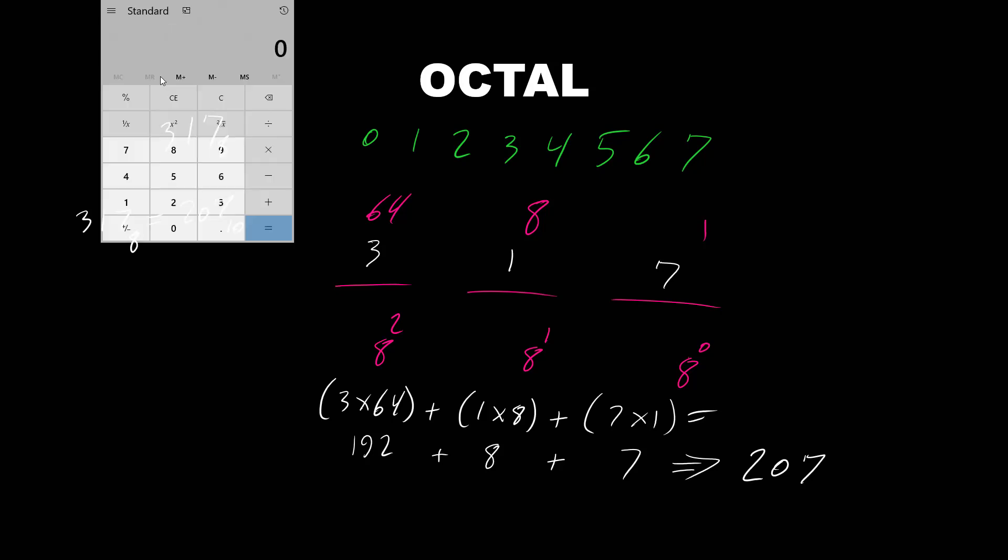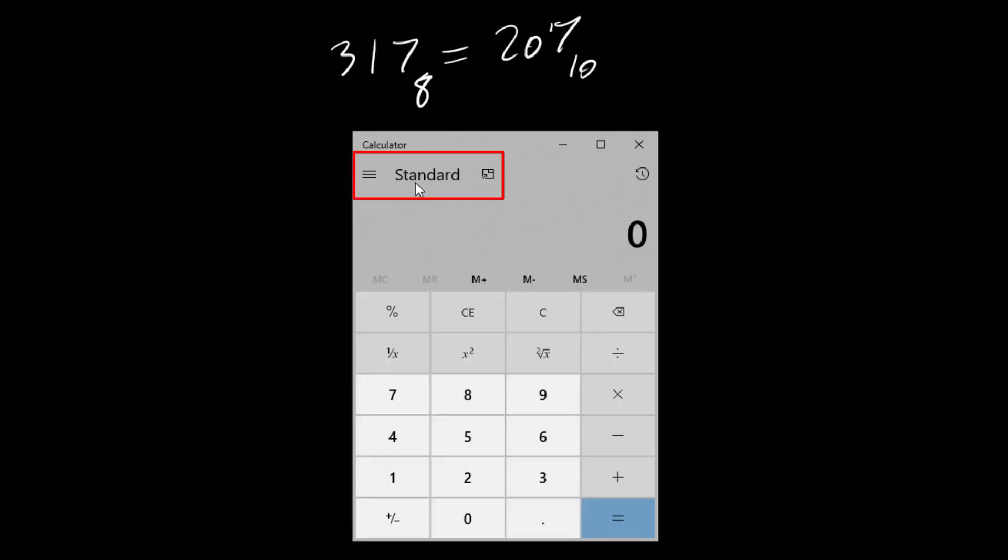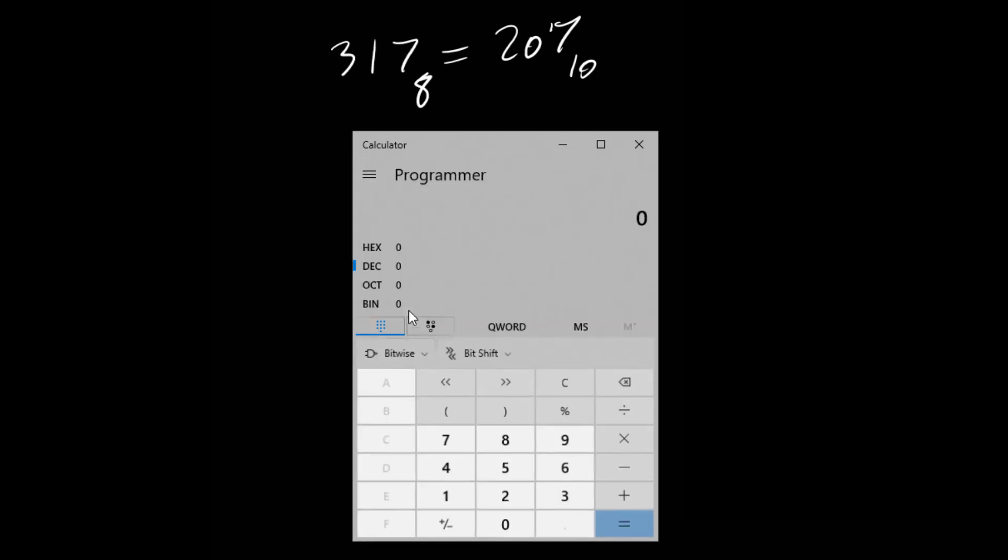Let's take a look using calculator. So we need to change the standard view to the programmer view and making sure octal is selected and entering this value 3, 1, 7. As we can see decimal is 207.